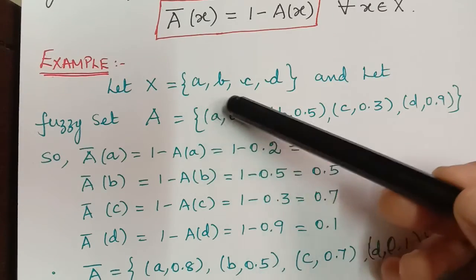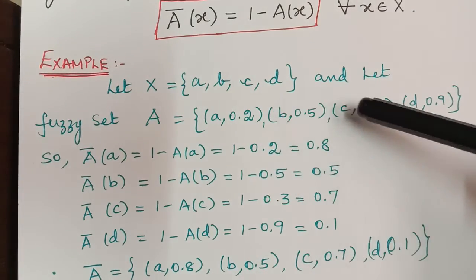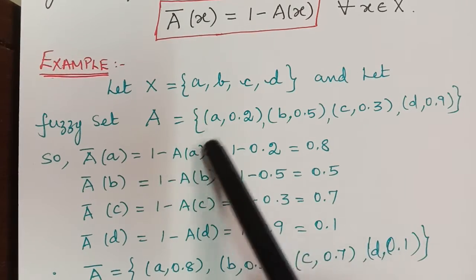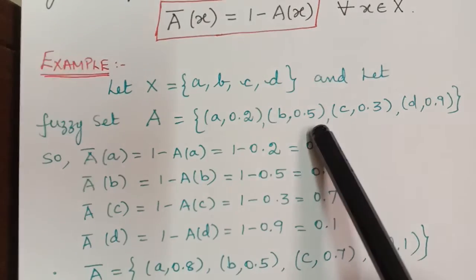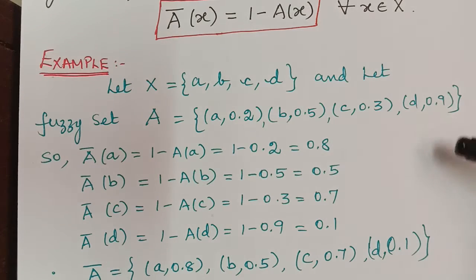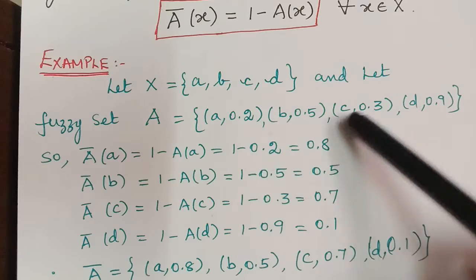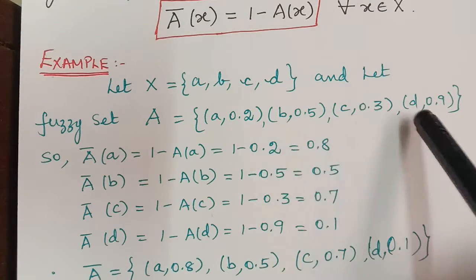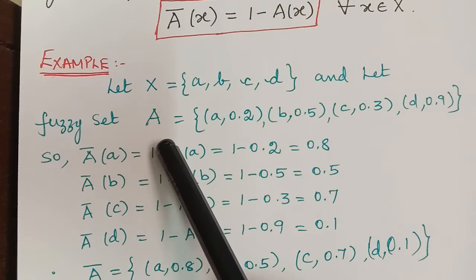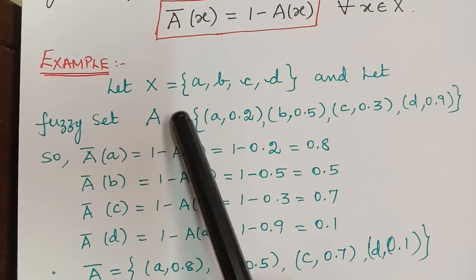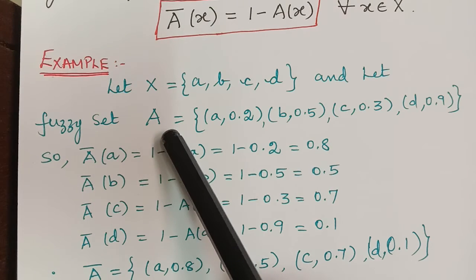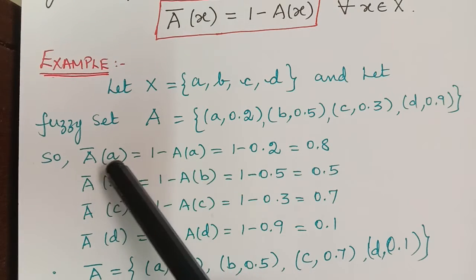Let's understand this with an example. Here we are considering a universal set X = {a, b, c, d}, and the fuzzy set A = {a/0.2, b/0.5, c/0.3, d/0.89}. These values represent the membership grades of a, b, c, and d in the fuzzy set A. Now let us find the complement of this set A, denoted by ā.